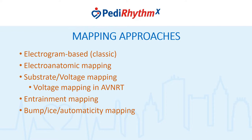In terms of mapping, we're going to discuss a number of approaches that have been used over the years. First of all, standard electrogram-based or classic mapping, electroanatomic mapping, substrate voltage mapping, in particular voltage mapping and AVNRT, entrainment mapping, and then finally these other concepts like bump mapping, ice mapping, and mapping using automaticity.